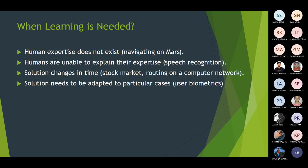For example, in face biometrics, recognizing a face in an unconstrained environment is very difficult. We have to consider lighting conditions, appearance of the face, pose of the face, background, and glasses. These are different difficulties in the unconstrained environment, and while it is very difficult for humans, it is not very difficult for machines running machine learning algorithms.